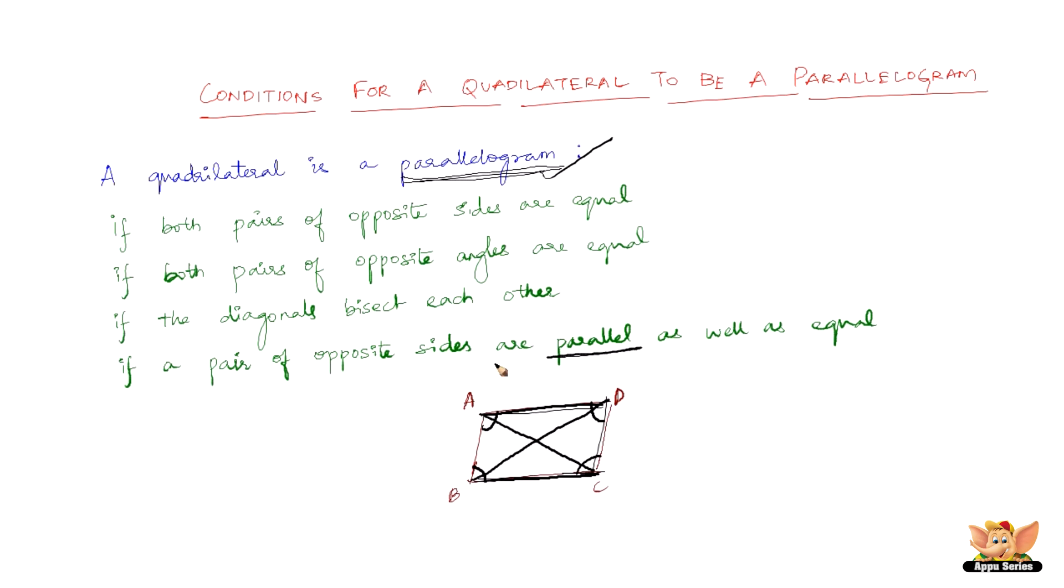Now, just coming back to the last condition here. What happens if two parallel lines are not equal? What happens if two lines are parallel and one line is longer than another? Then it is definitely not a parallelogram. Then a condition arises called a trapezium. This is a trapezium, not a parallelogram.